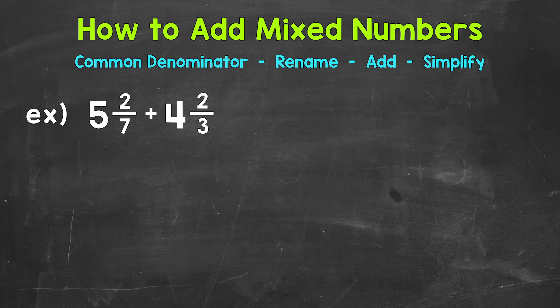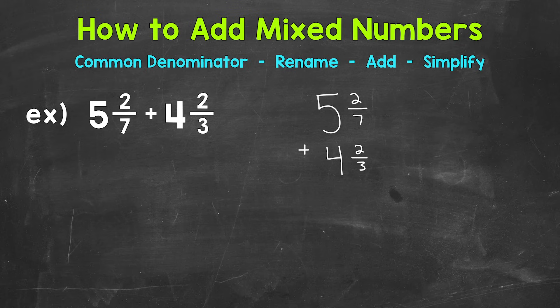Now we're going to start with addition. Let's jump into our example where we have 5 and 2 sevenths plus 4 and 2 thirds. The first thing I'm going to do is rewrite this problem vertically — up and down — lining up the fractions and whole numbers. Once we do that, we need to find a common denominator. We're not able to add because we have a 7 and a 3 for our denominators.